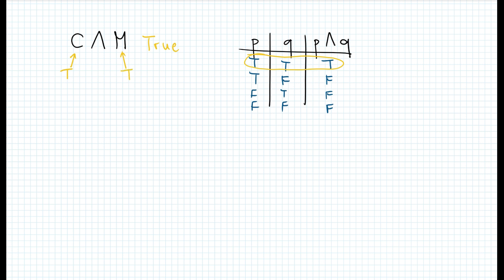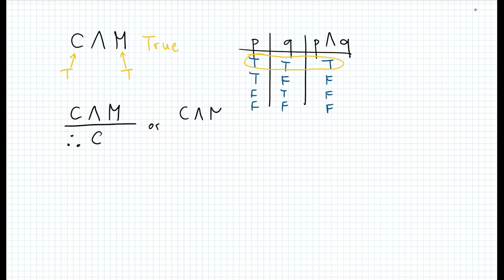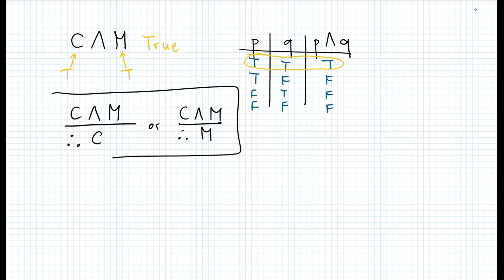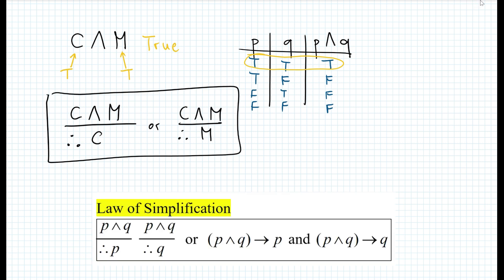So what does that mean? That Janet will go to college — that is true — and Janet is also going to medical school — that is true as well. So we can say: we know C and M is true, therefore C is true. Or similarly, C and M is true, therefore M is true. This is a new law of logic called the law of simplification. It states that if you have a conjunction P and Q, it must also be true that P itself is true, or that Q itself is true.